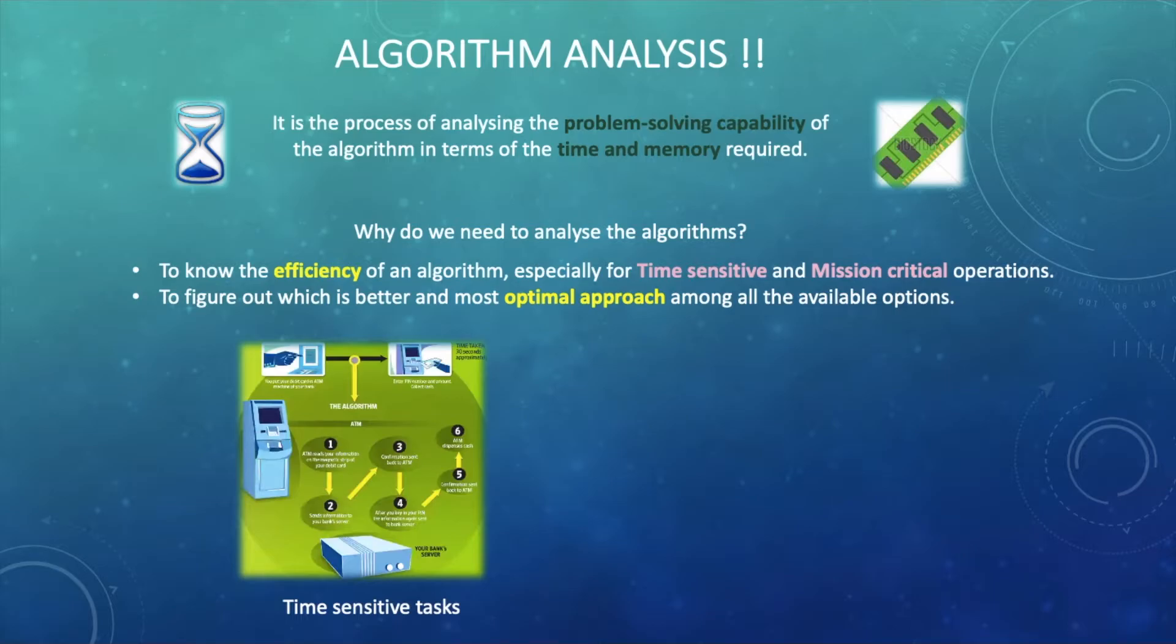But what we cannot see is that in the background there is a complex algorithm running which is communicating with the bank to validate our cash requirement and then providing the exact amount of cash that we have asked for. And please note that all these steps are happening in the real time. So in this case the efficiency of algorithm is very important. It should be thoroughly analyzed to get the assurance that every time we are getting correct output in expected time interval.